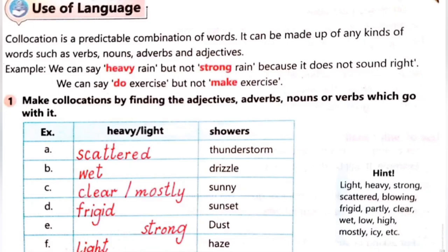We can say 'do exercise' but not 'make exercise'. Hamesha exercise ke saath bhi aapne 'do' ka word hi suna hoga — 'make exercise' ka word aapne kabhi nahi sunaga. Exercise ke liye hum 'do' ka word use karenge. To yeh jo correct words hain, predictable hain, inko kya kehte hain — collocation. Make collocations for finding the adjectives, adverbs, nouns and verbs which go with it. Ab hamare paas kuch words hain aur saath hi hamare paas hints hain — light, heavy, strong, scattered, blowing, frigid, partly, clear, wet, low, high, mostly, icy, etc.